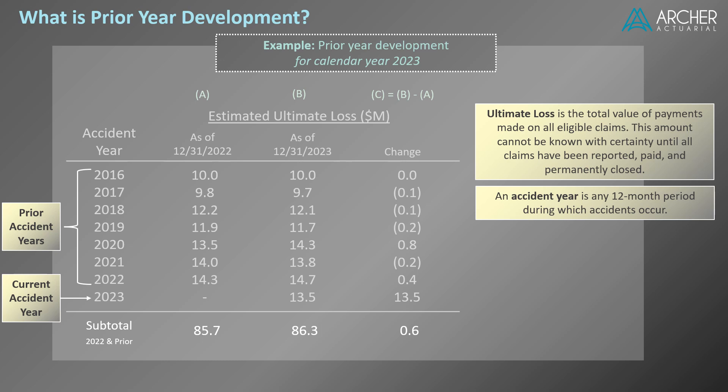Back to our example. In column A, we have our estimates of ultimate loss by accident year from 2016 through 2022, evaluated as of 12-31-2022. In total, estimated ultimate loss equals $85.7 million. This amount reflects information known through year-end 2022.